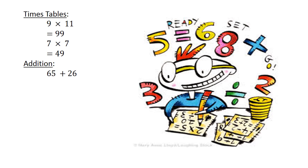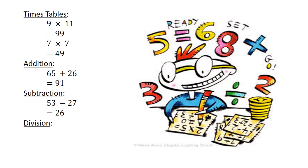Addition: 65 plus 26 equals 91. Subtraction: 53 minus 27 equals 26. Division: 40 divided by 4 equals 10.